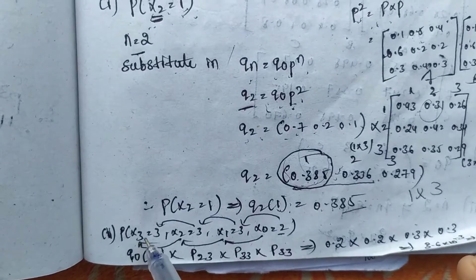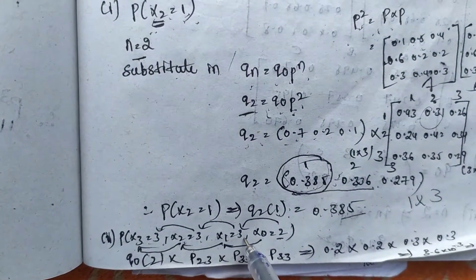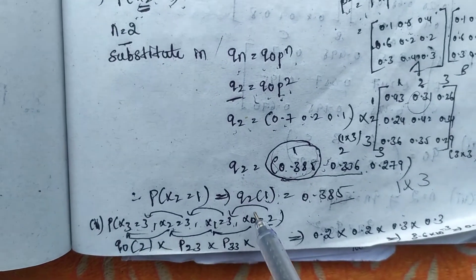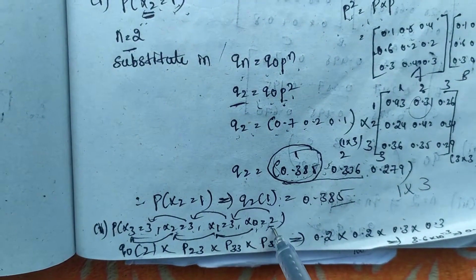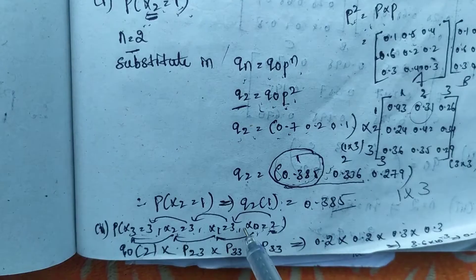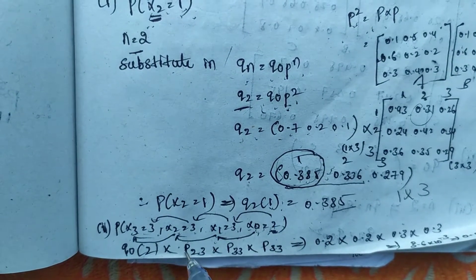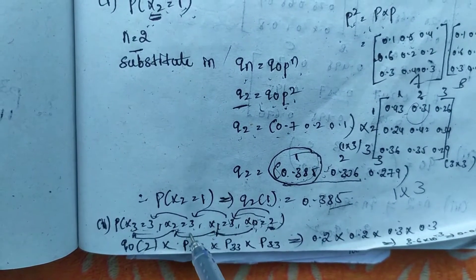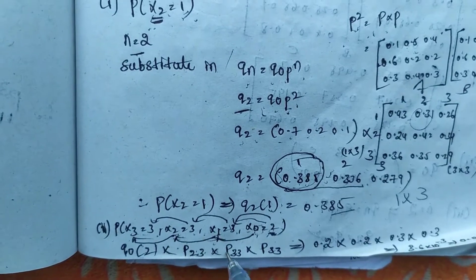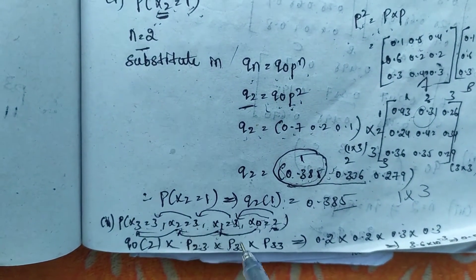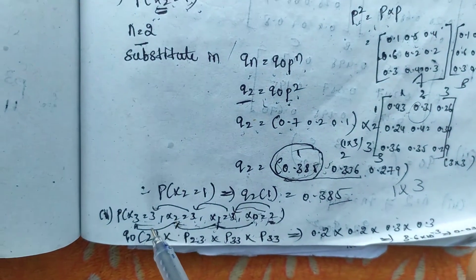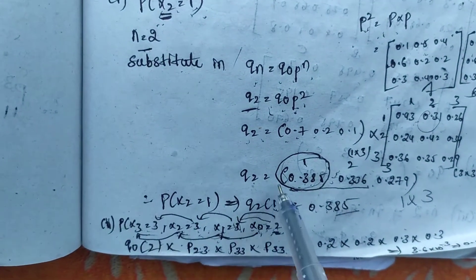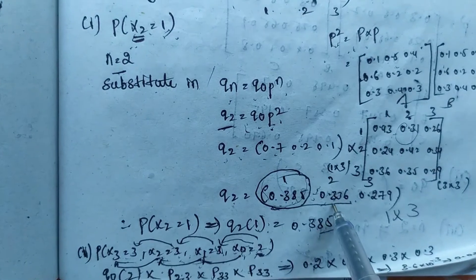The second question is P(X3=3, X2=3, X1=3, X0=2). For this type of problem, we take q(0) of the initial state. Here X0 is in state 2, so q(0) of 2 = 0.2. From X0 to X1 the difference is 1, so we take P, going from state 2 to state 3: P(2,3). From X1 to X2 the difference is 1, so we take P going from state 3 to state 3: P(3,3). Similarly, from X2 to X3, taking P(3,3).